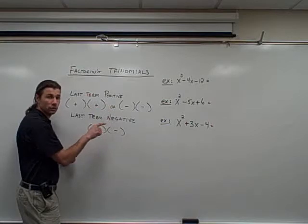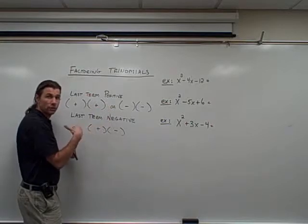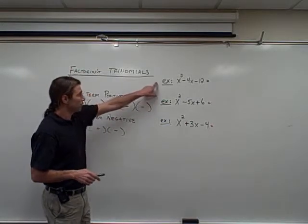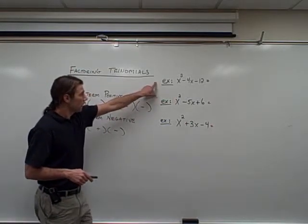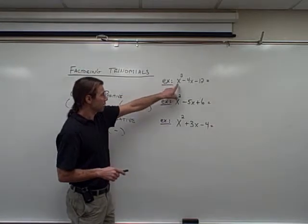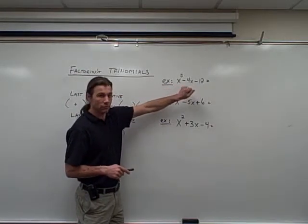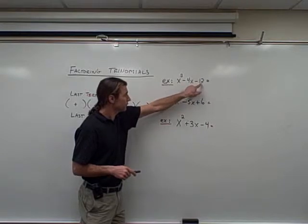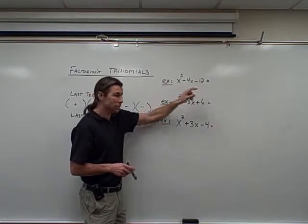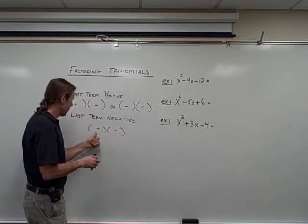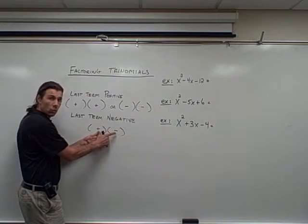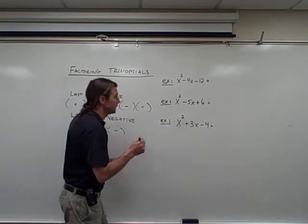I'm going to show you a few examples to illustrate this idea. In my first example I'm factoring x squared minus 4x minus 12. I focus right on the last term. The last term is negative, so I know that my signs have to be one positive and one negative.